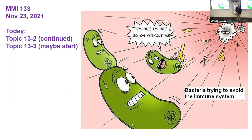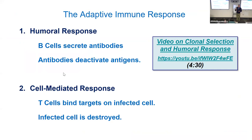Last day we were talking about adaptive immunity. We introduced all the parts of adaptive immunity and got down to humoral immunity. I showed you that video with the Australian guy talking about clonal selection and what happened during a strep throat infection. I want to talk about that for a couple more minutes and then contrast that with cell-mediated immunity.